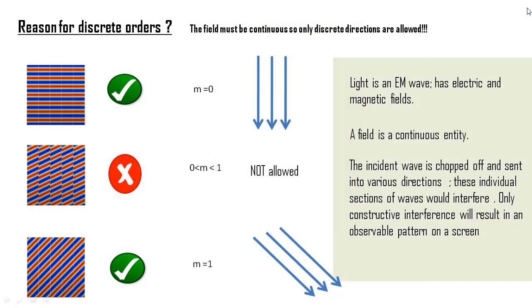We ask ourselves a question about why the diffraction pattern is discrete in nature and there are no continuous colors in it and there are regions of darkness and light. The reason can be understood as follows. Since light is an electromagnetic wave and is made up of things called fields, it is due to the varying defining properties of a field that we only see discrete orders.